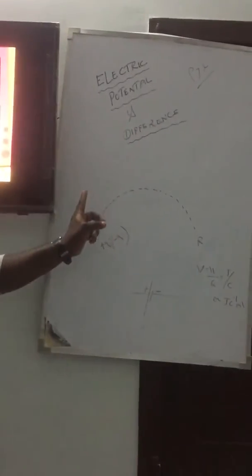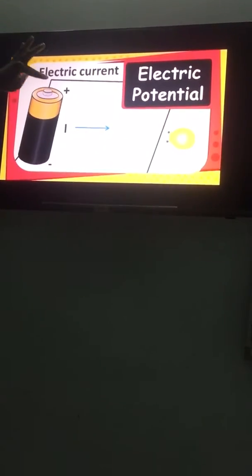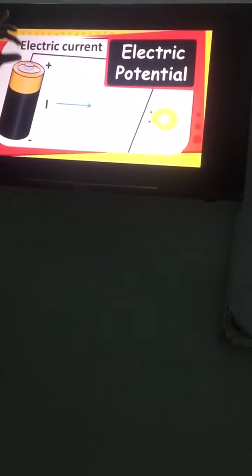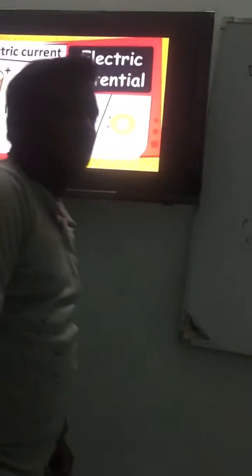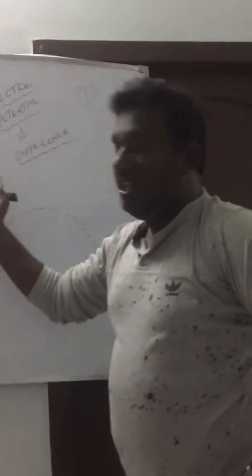Here, where you see electric potential, you are moving a charge from infinity to a particular point. But here, you are moving a charge between the plus terminal, which is called higher potential, and the minus terminal, which is called lower potential. So the amount of work done in moving a charge between higher potential and lower potential is called the potential difference. That is the distinction between electric potential and potential difference.